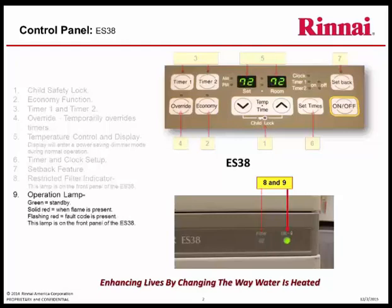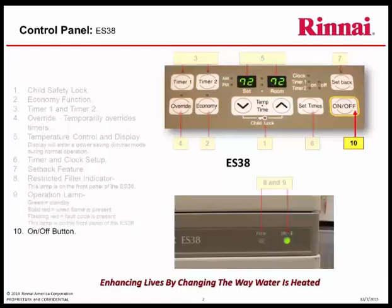Operation lamp. The functioning of this lamp is important as it gives you the current status of the heater. Green is standby, meaning the unit is powered on but not operating. Solid red means flame is present and the furnace is producing warm air. Flashing red indicates a fault code is present. This lamp is also located on the front panel. And finally, the on-off button.